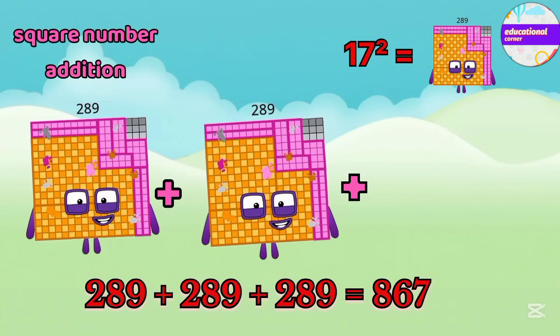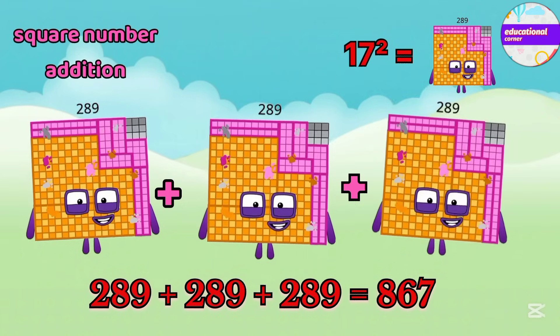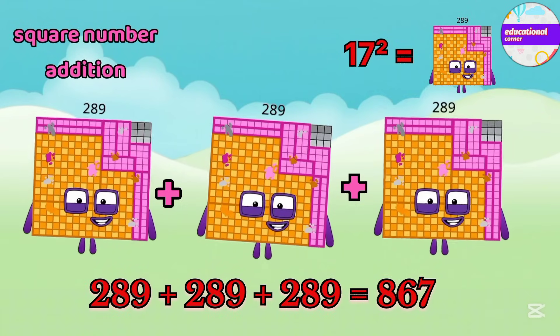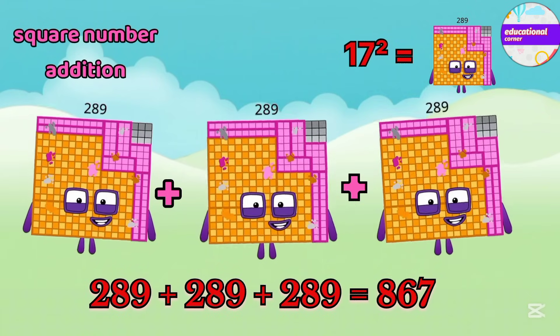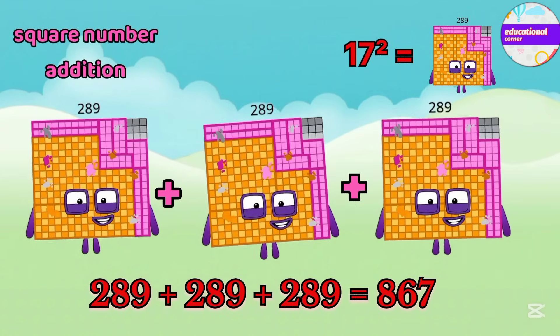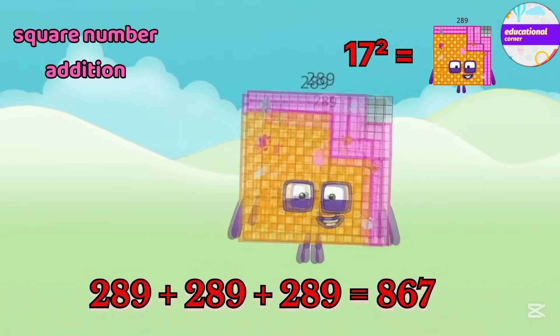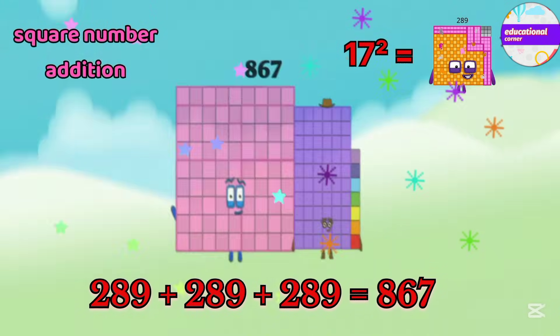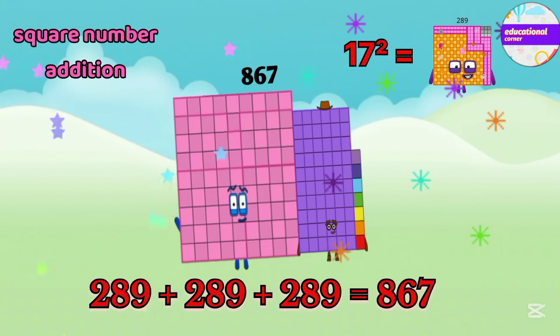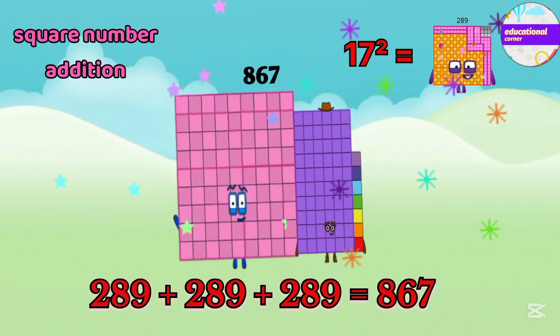The square of 17 is 289. If we add 289 three times, the answer is 867.